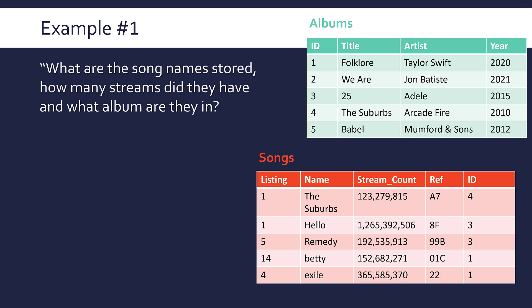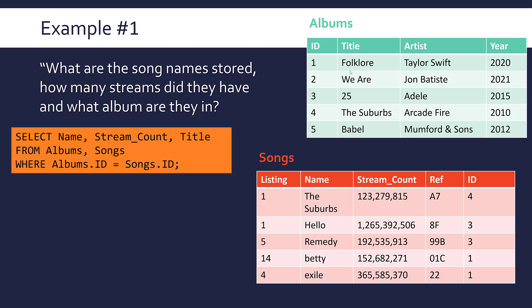For this example, I want to find out what are the song names stored, how many streams did they have, and what album are they in. So I'm looking for three fields basically: name, stream count, and album title - data across two tables. I've got to be a little bit cleverer about how I use SELECT. Starting with my first clause, which is quite simple - just selecting the fields, which are name, stream count, and title.